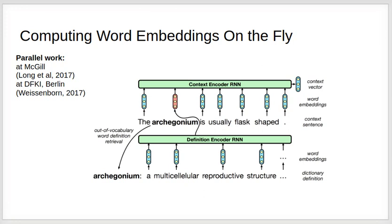For example, here there is a rare word Archegonium, and the definition reader is trained to produce a useful embedding of this word. And the whole system is trained together end to end.